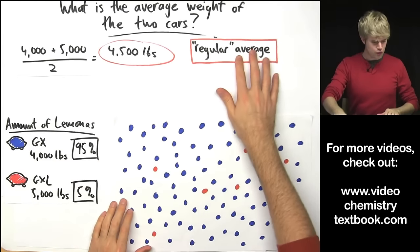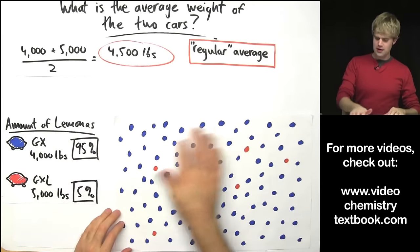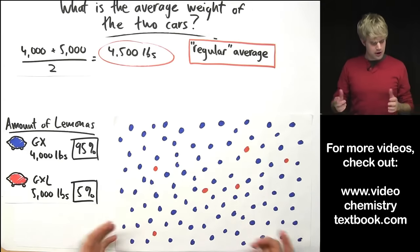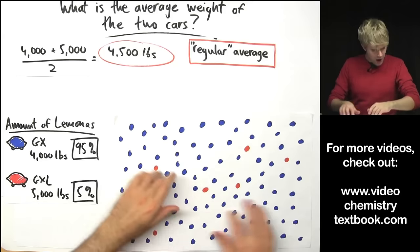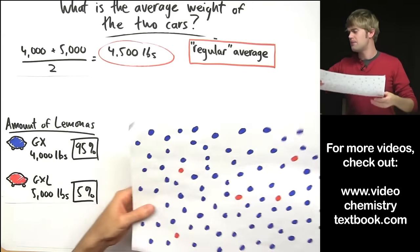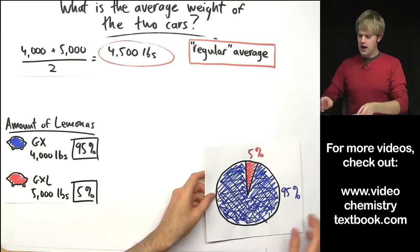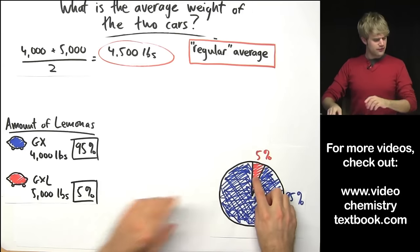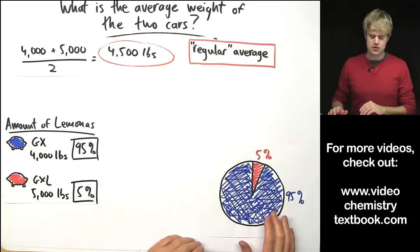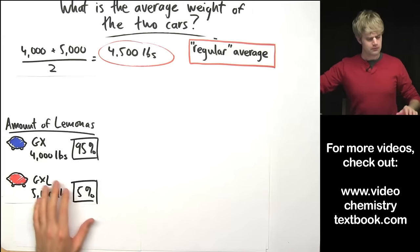We could show this graphically. If we were to pull 100 random Lamonas off the street, all the blues would be the GXs whereas the ones in red show the GXLs. Obviously there are many more but this is a hundred taken at random and we can see the same thing on a pie chart with just 5% GXLs and the vast majority, 95% are GXs.